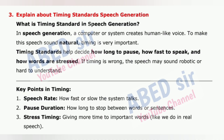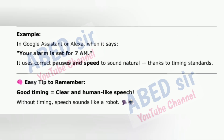3. Stress timing — giving more time to important words, like we do in real speech. Example: In Google Assistant or Alexa, when it says 'Your alarm is set for 7 a.m.', it uses correct pauses and speed to sound natural, thanks to timing standards. Easy tip to remember: Good timing equals clear and human-like speech. Without timing, speech sounds like a robot.